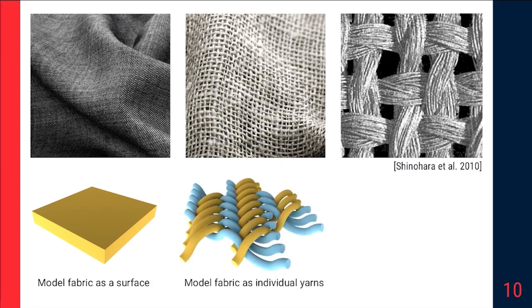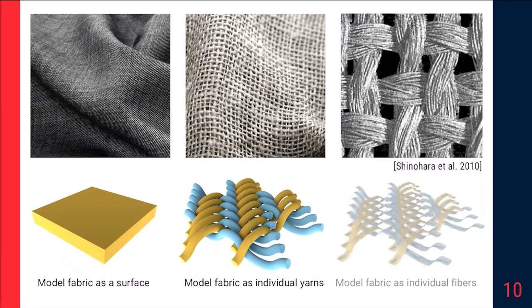we can model fabric as a surface that has some thickness. Or if we want more details, we can model them as individual yarns. Or if we really want to be hardcore, we can model the fibers, although it's usually considered intractable for simulation. But even with these geometries, how could we interact them with liquid? If we just set them as boundary conditions, it could be too complicated for yarns and fibers and too thin to capture even just modeling them as a surface.